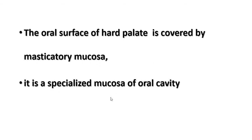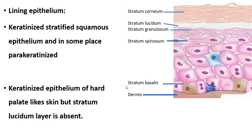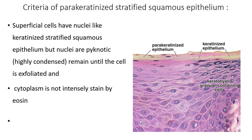The masticatory mucosa is a specialized mucosa of the oral cavity; it is found in the gums and the hard palate. The different layers of the epithelium are: stratum basale, stratum spinosum, stratum granulosum, stratum lucidum, and stratum corneum. The stratum lucidum is absent in the epithelium of the hard palate.